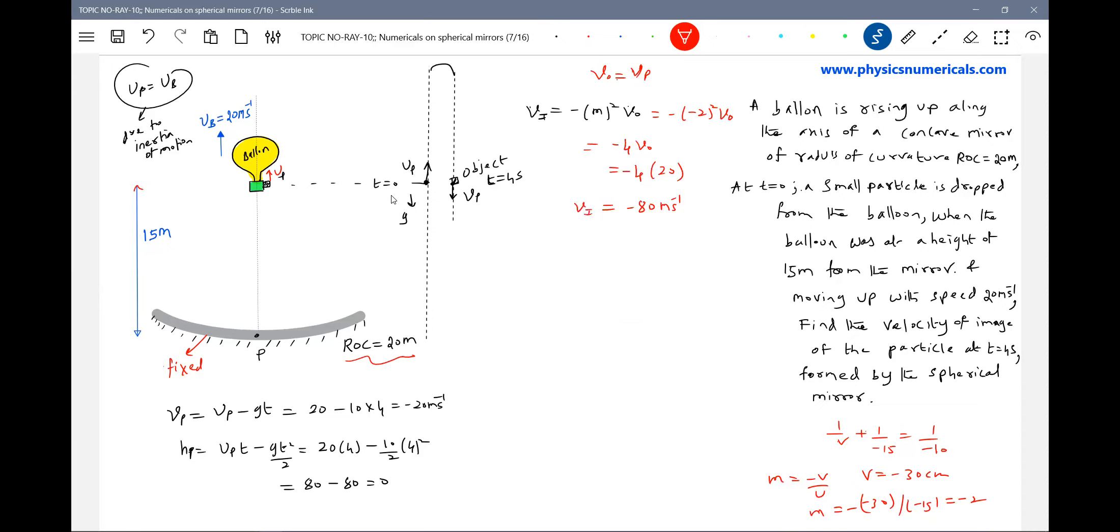What does it mean? Like negative sign. We have to interpret. Look at where is the object. What is the radius of curvature? 20 meter. So object is between the focus. Here, here. Look at this one.